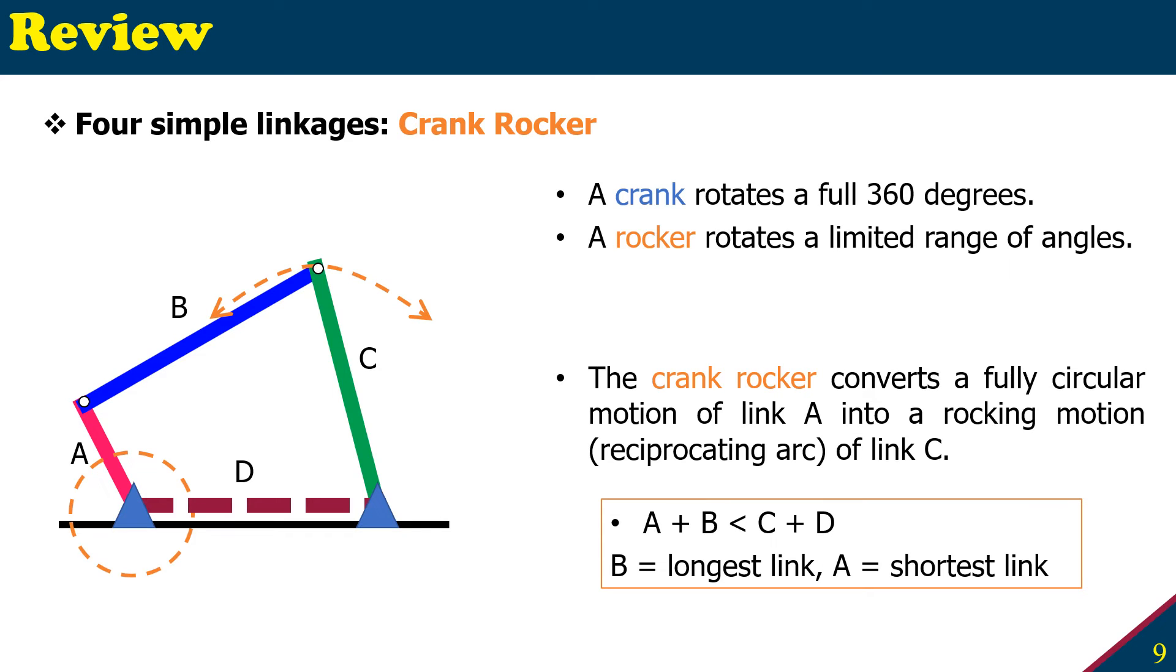So the first one is the crank rocker. A crank that can rotate a full 360 degrees, full rotation, those are called crank. If it doesn't rotate full 360 degrees and has limited range of angle movement, then it is called a rocker. Then a crank rocker would be that which converts a fully circular motion of link A into a rocking motion or reciprocating arc motion of link C. So link A rotates 360 degrees, that's a crank. And C here can only rotate a limited range, that's a rocker.